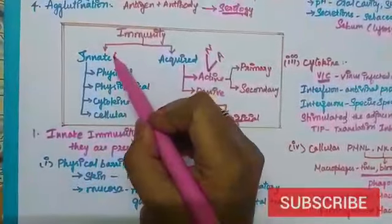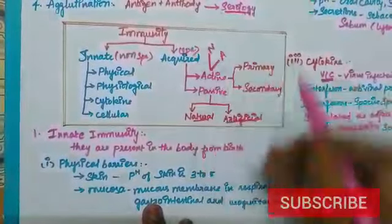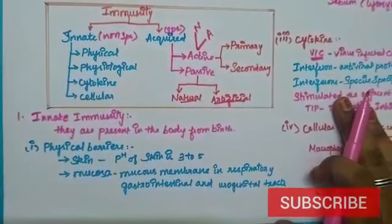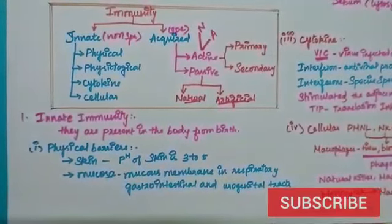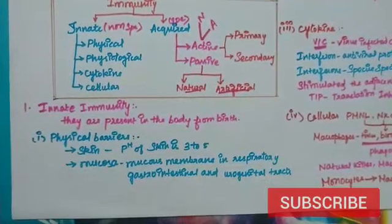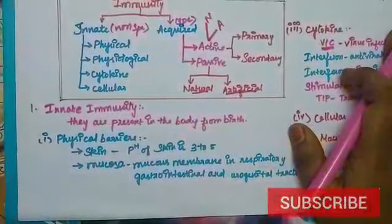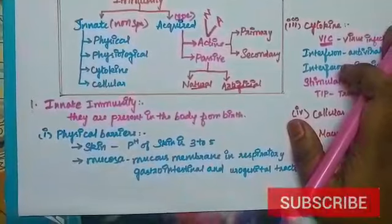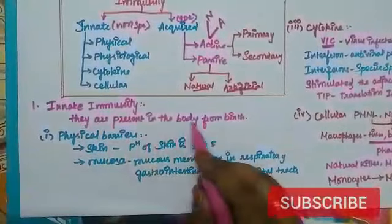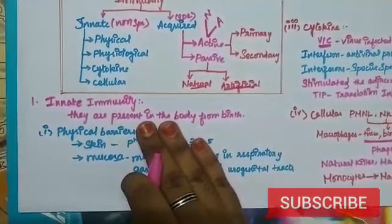Innate immunity is non-specific in nature while acquired immunity is specific in nature. Now let's look at the immune system. The pathogen or disease causing organism is present around all of us. What gives us protection from these pathogens? We are not prone to diseases every time, only at particular times. The immune system gives us protection against the pathogens present in the surrounding. Innate immunity is present in the body from birth, giving us primary immunity.